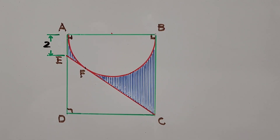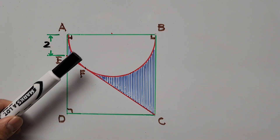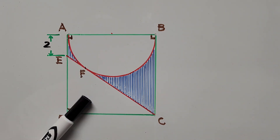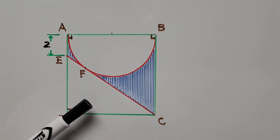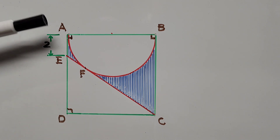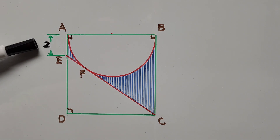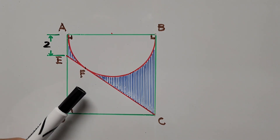Hello everyone, welcome to Kajiano Easy Math. We have here a geometry problem with a given figure: a circumscribing square ABCD, an inscribed semicircle, and an inscribed triangle. These two geometric figures are tangent to each other at point F, and we have one given side, segment AE, that is two units. In this video we're going to solve for the area between these two figures.